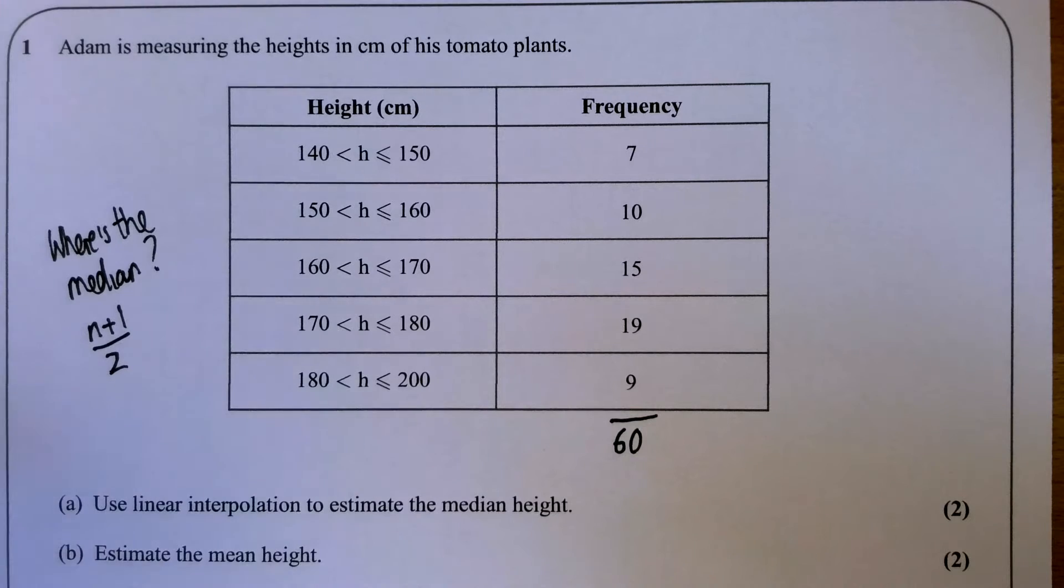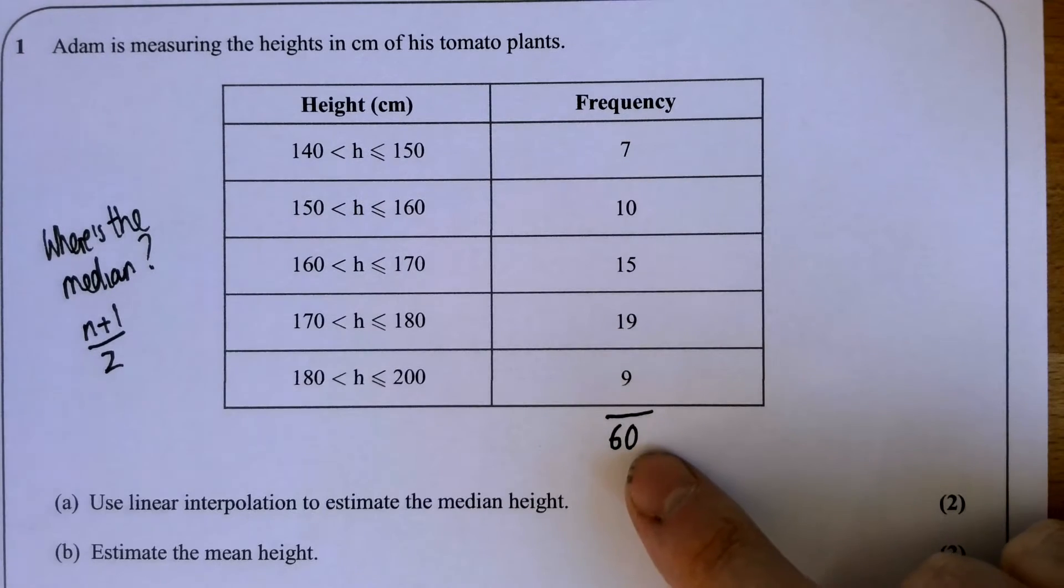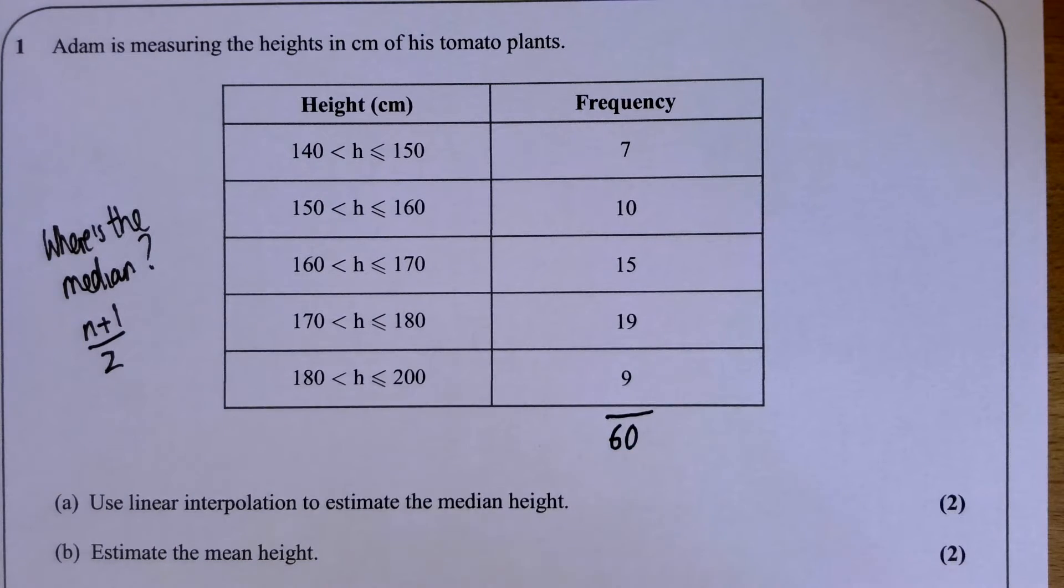That doesn't mean 4 is the median; it means the fourth value is the median. And so that's what we could do here with 60 values. 60 plus 1 divided by 2 is 30.5, so we know we're between the 30th and the 31st person.